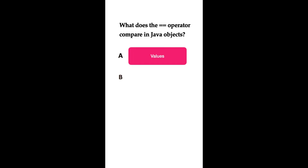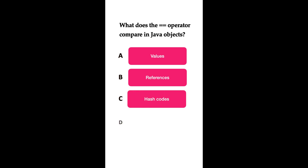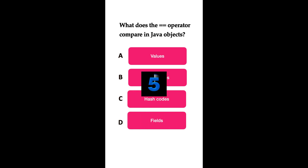Welcome to Java Quiz Series. What does the == operator compare in Java objects? Option A: Values, Option B: References, Option C: Hash codes, Option D: Fields. You have five seconds to answer this question. The answer is References.